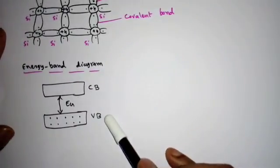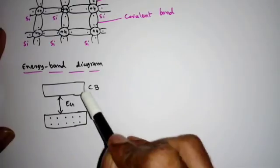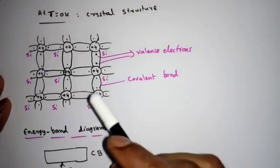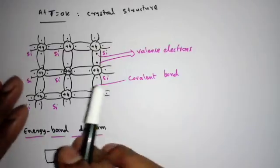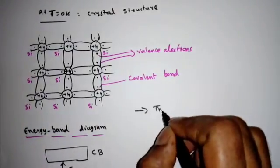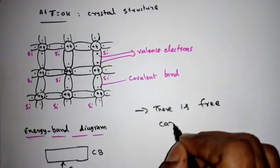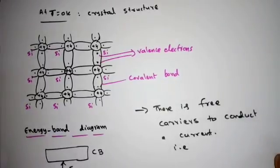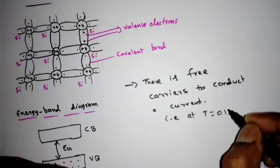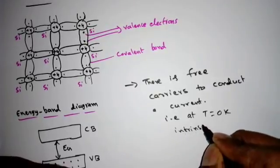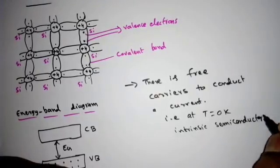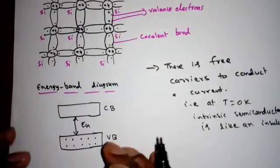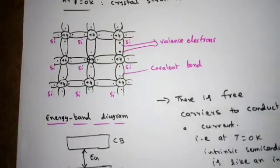At T = 0 Kelvin, looking at the energy band diagram, the valence band is fully filled. There are no free carriers in the conduction band at T = 0 Kelvin. This is the intrinsic semiconductor crystal structure at T = 0 Kelvin — there are no free carriers to conduct current. Therefore, at T = 0 Kelvin, an intrinsic semiconductor behaves like an insulator. Whenever there are no free carriers, no conduction is possible.